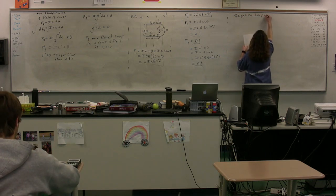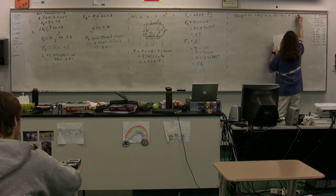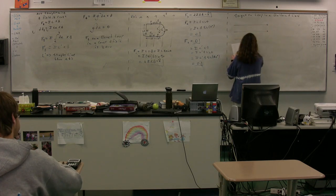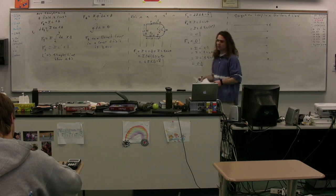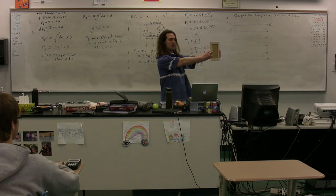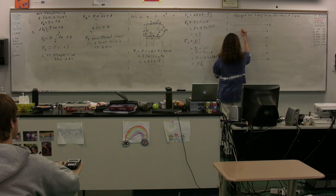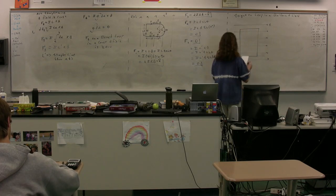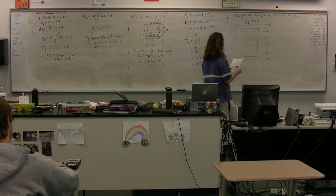Torque on a loop in a uniform magnetic field. We have a constant magnetic field pointing to the right. We have a loop shaped like a picture frame — a rectangle. Here is our wire, and this is going to be the top view of the wire. We need to look at it from two different views so that we can see exactly what's going on.